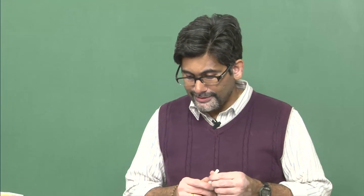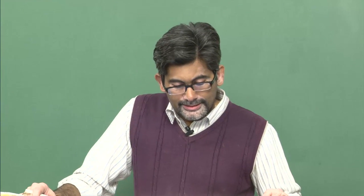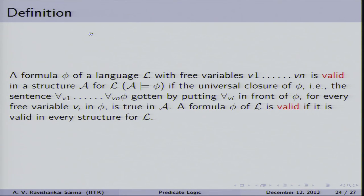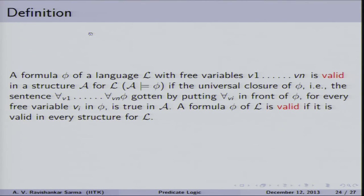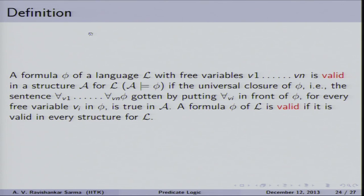A formula φ of language L with free variables v1 to vn is valid in a structure A if the universal closure — obtained by placing ∀vi in front of φ for every free variable vi — is true in A. A formula φ of L is considered valid if it is valid in every structure for L; otherwise it is considered an invalid formula.